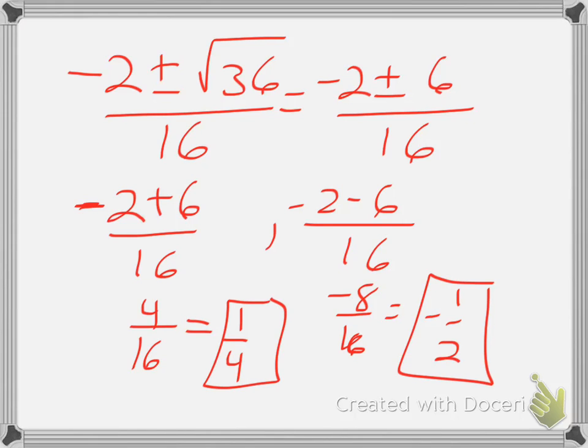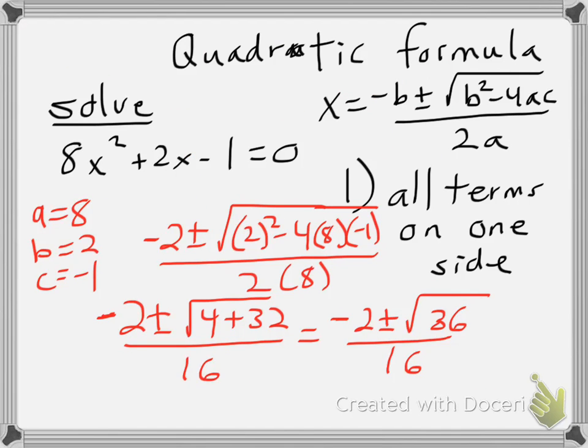So, 1 fourth and negative 1 half are my two solutions. Following my quadratic formula, I want all my terms on one side, put my numbers in, and it's a matter of simplifying as far as I can go.